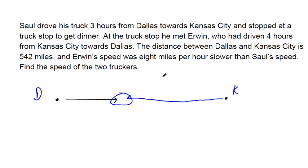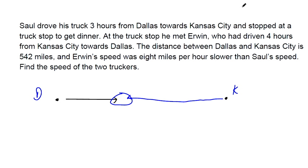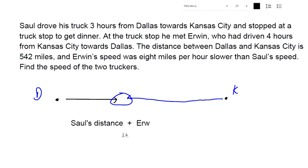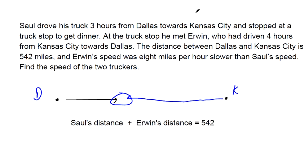Since they're both together at the same point, if I add their two distances together, that should equal the total distance from Dallas to Kansas City — 542 miles. And we know how to express distance: distance is rate times time, assuming we're driving at a constant rate.